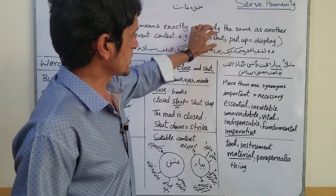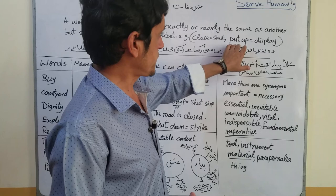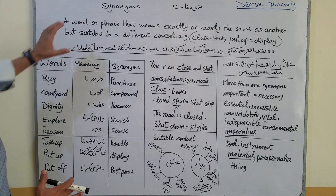Now you see 'close' and 'shut' — these are two synonyms. Close and shut have the same meaning. 'Put up' is an example of a phrase, and the synonym of it is 'display'.